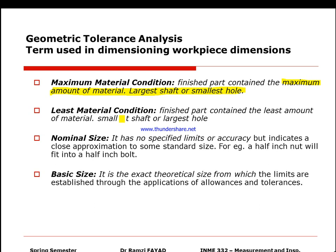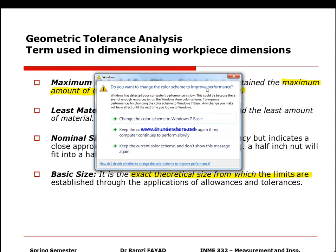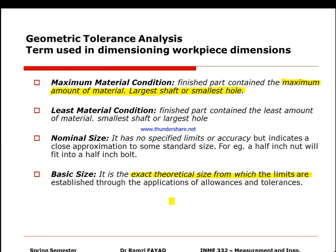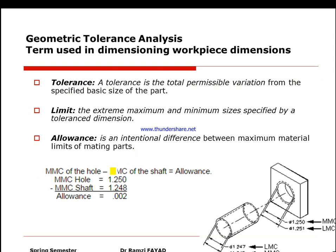Nominal size has no specific limit or accuracy but indicates a close approximation to some standard size — for example, a half-inch shaft going through a half-inch hole. Basic size is the exact theoretical size from which the limits are to be derived. It is typically the middle value in a normal distribution. Tolerance is the total permissible variation from the specified basic size.